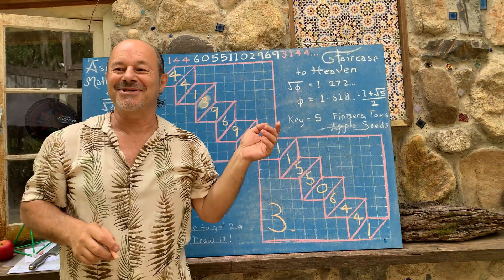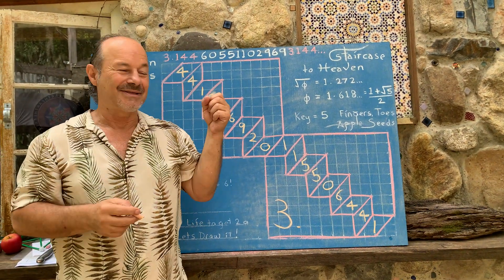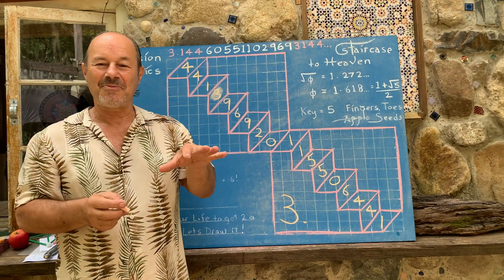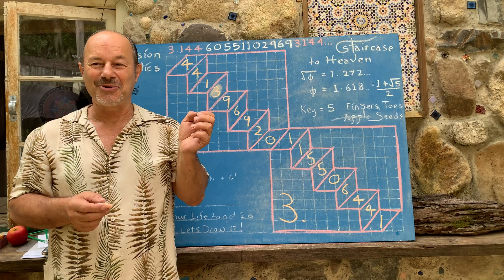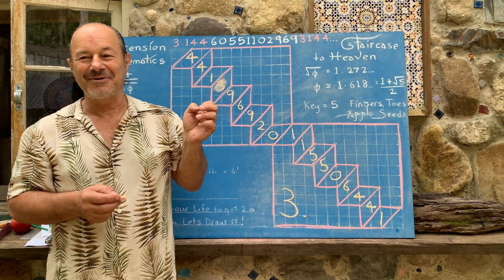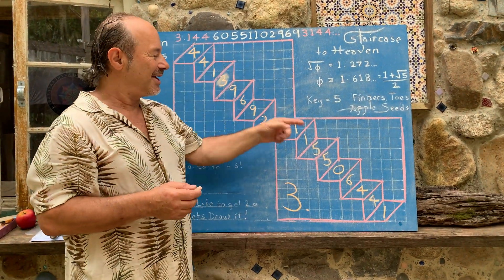So I'll just recite that quickly to you to show you that I know this, it's really important to me. So the true value of pi is 3.144, 6, 0, 5, 5, 1, 1, 0, 2, 9, 6, 9, 3, 1, 4, 4. And it actually goes forever.